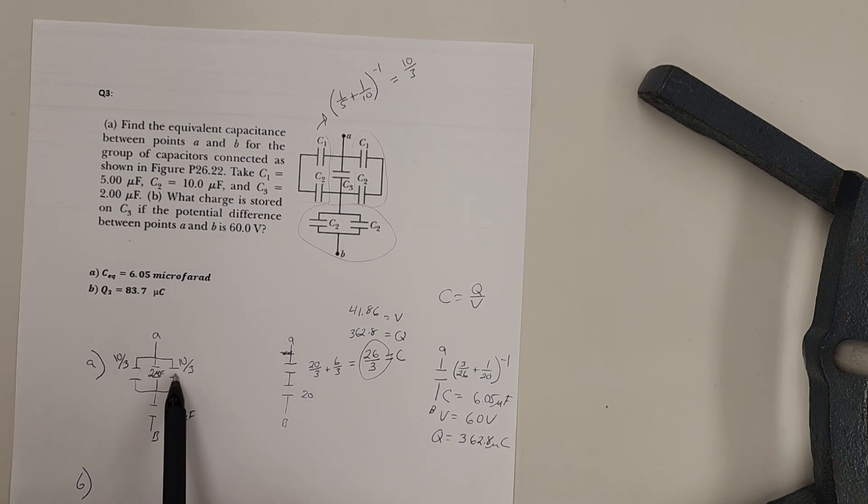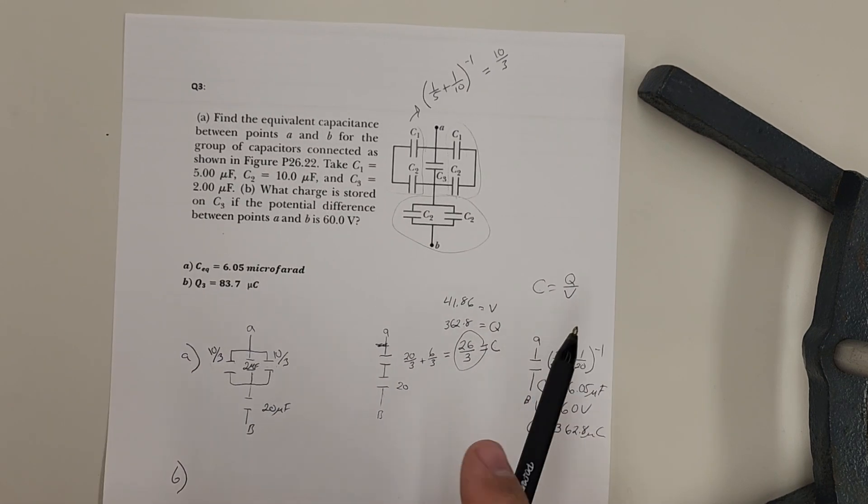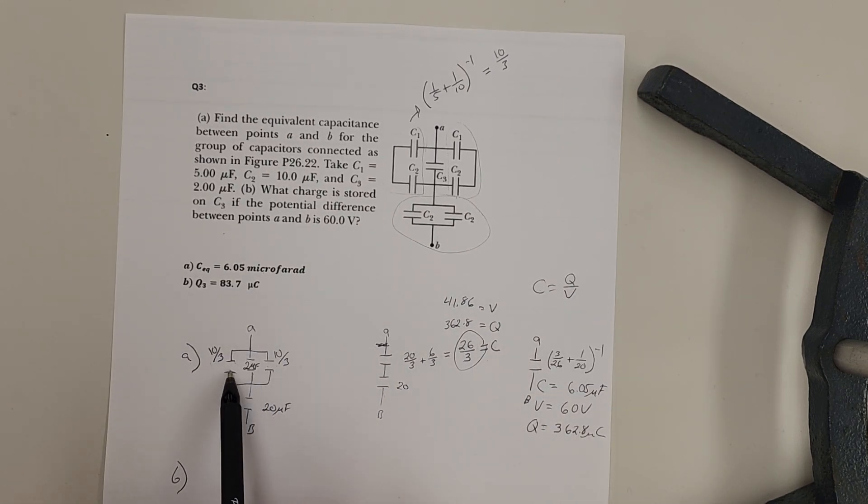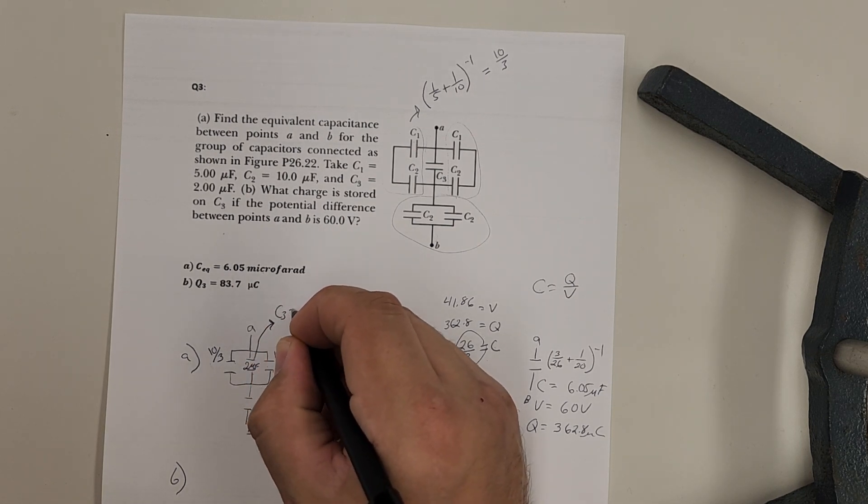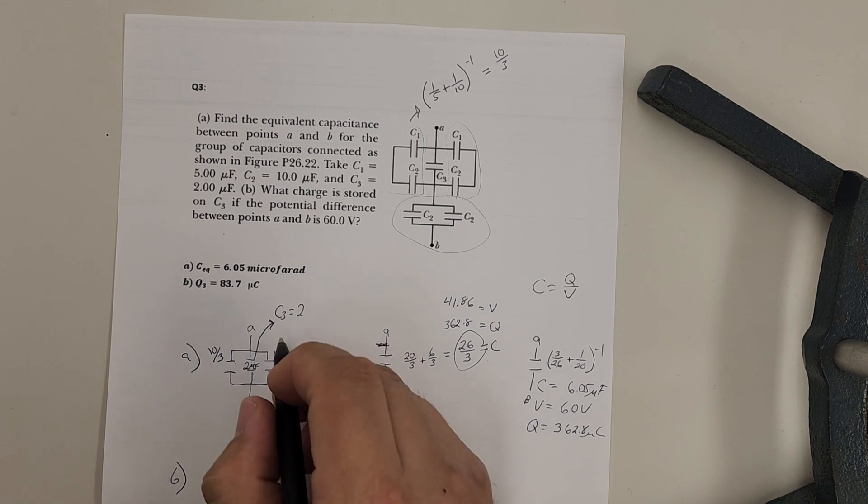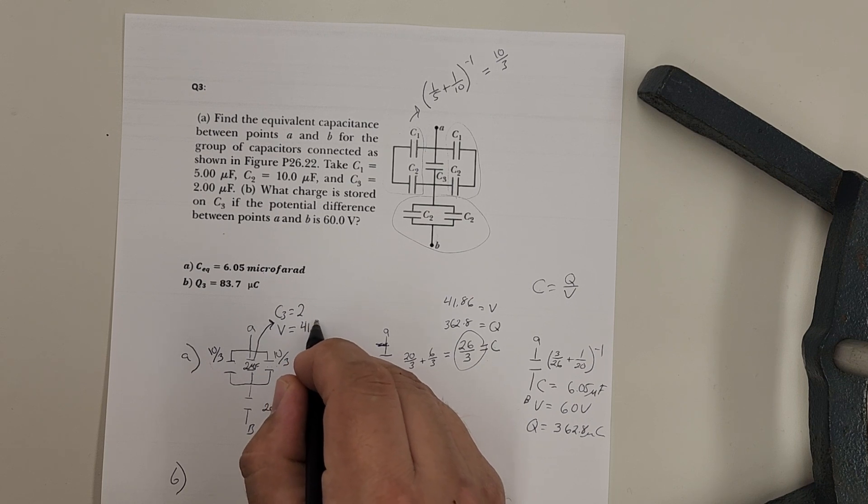This came from these. And there's my Q3, what I'm looking for. Okay. So these being all in parallel with each other means they'll all have the same V, which means this C3 capacitor. C3 was 2 microfarad. Okay. I know that the voltage on that C3 will be 41.86.